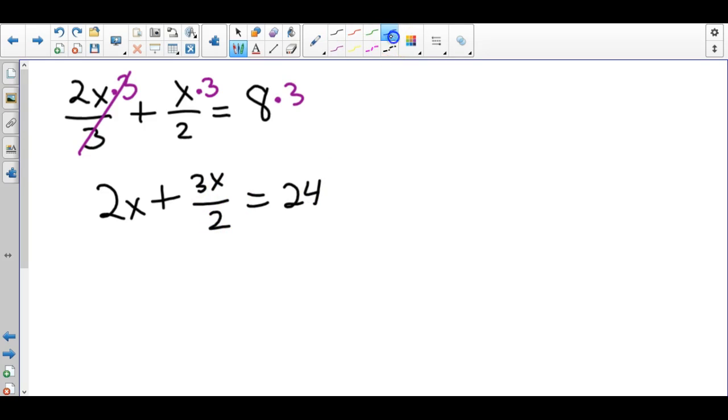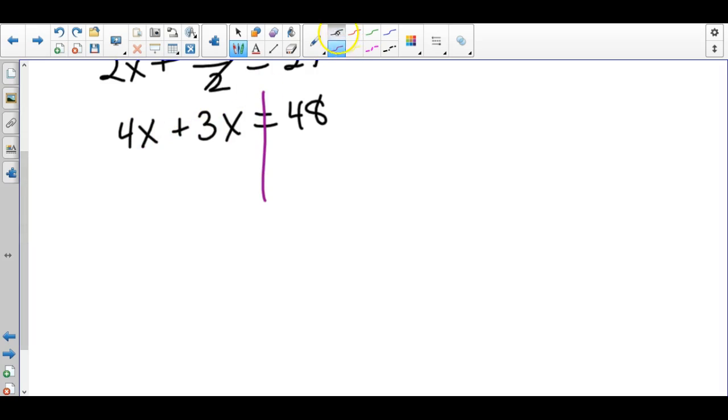Now we're going to do this a second time to get rid of this fraction. This time we would multiply by 2. Again, wherever you multiply, you have to multiply by everything. So now we have 2x times 2 is 4x. The 2s cancelled, leaving the 3x behind. And 24 times 2 is 48. Once we've gotten rid of the fractions, now it's similar to the problems we've already done. On the left side we have some like terms: 4 plus 3 is 7x. Then we can divide both sides by 7.